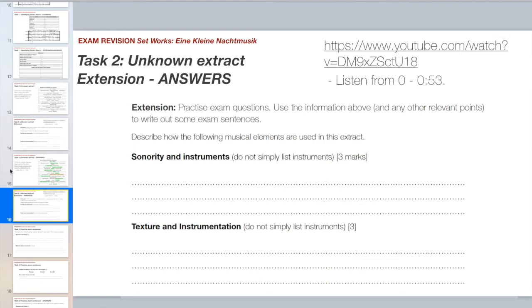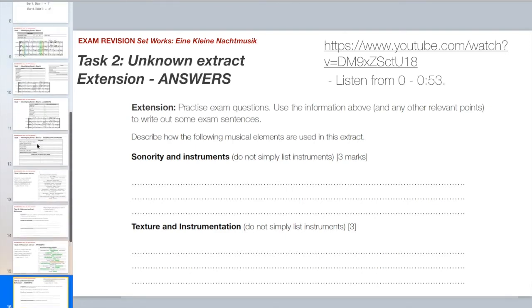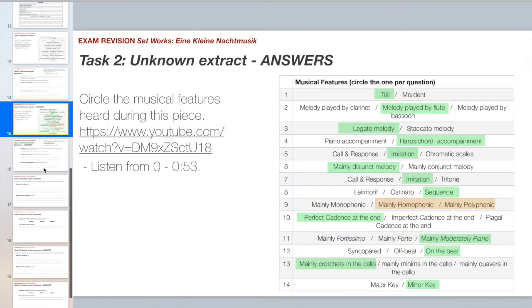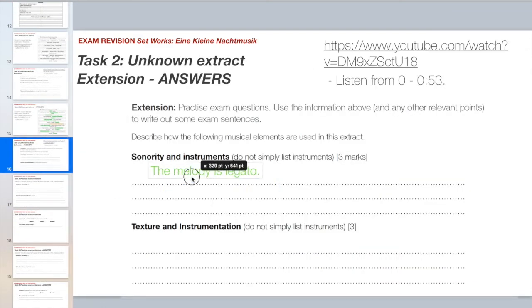Okay, the extension answers. If you haven't tried the extension, feel free to skip ahead or feel free to watch if you think it's going to help you. Okay. Describe how the following musical elements are used in this extract, sonority and instruments. Well, the flute plays legato melody.